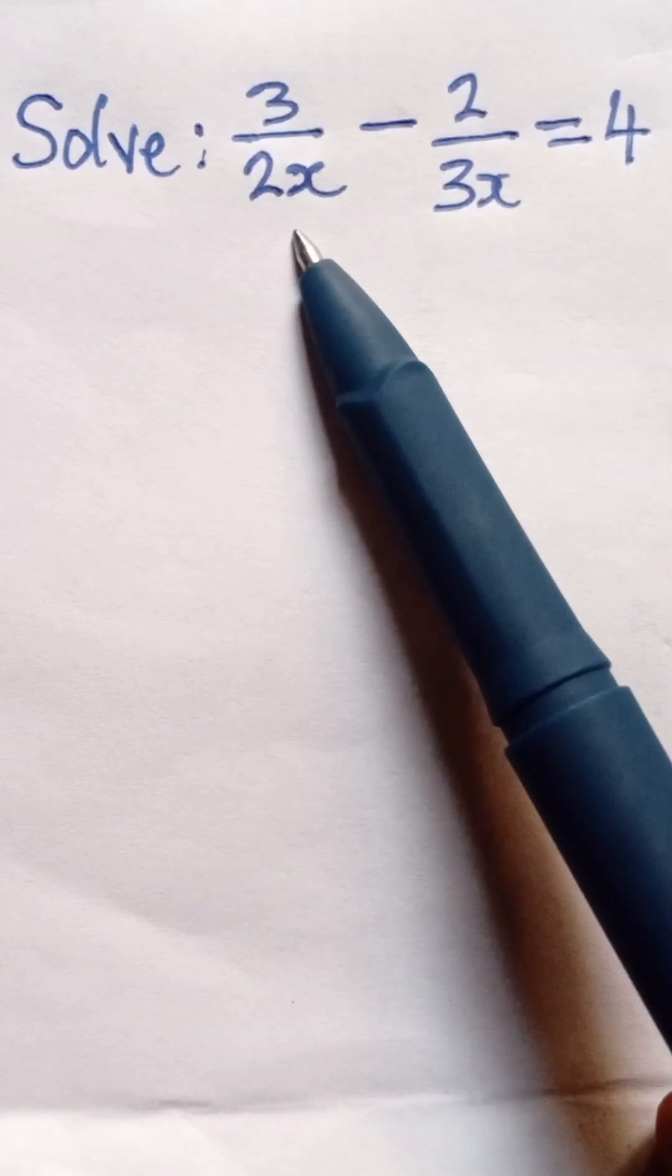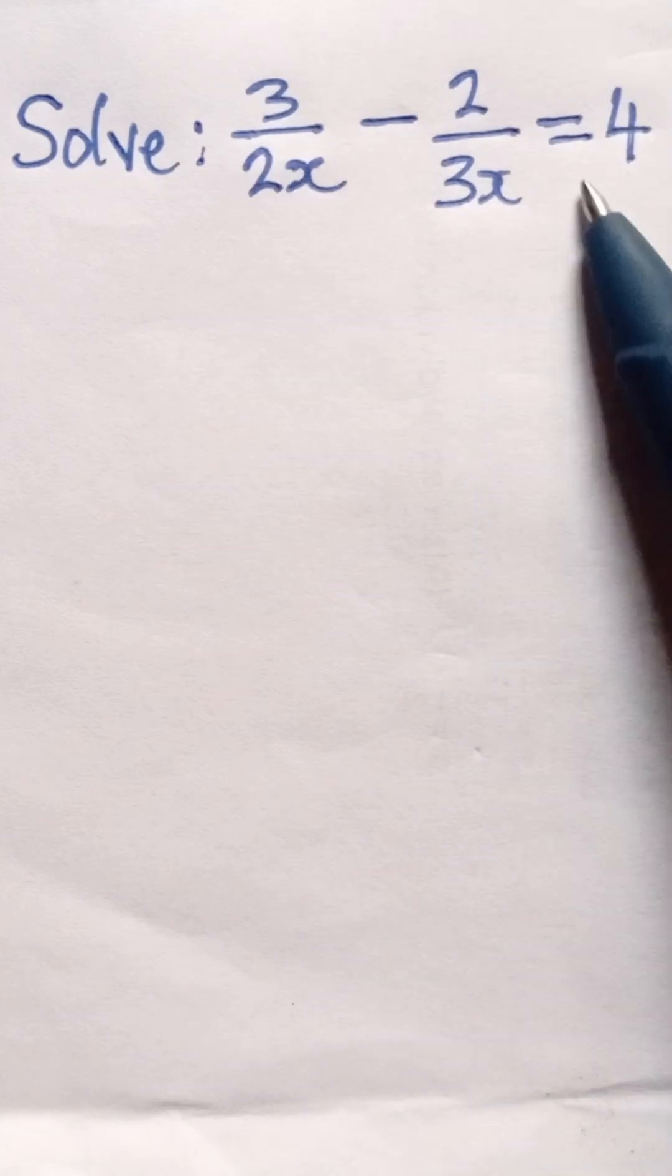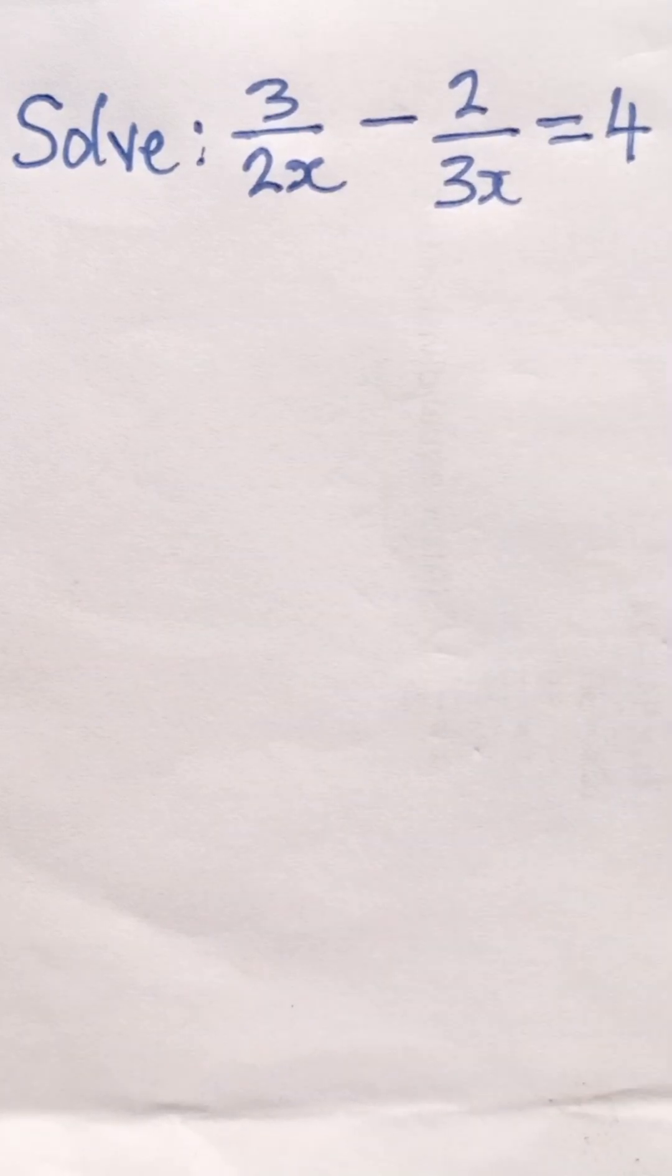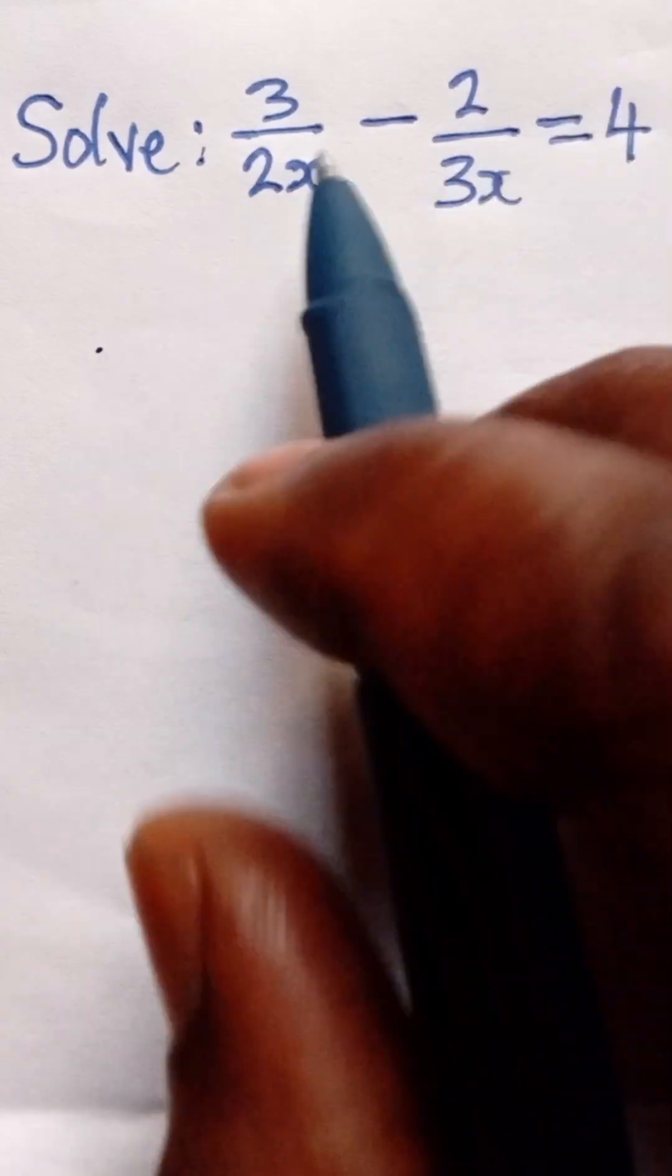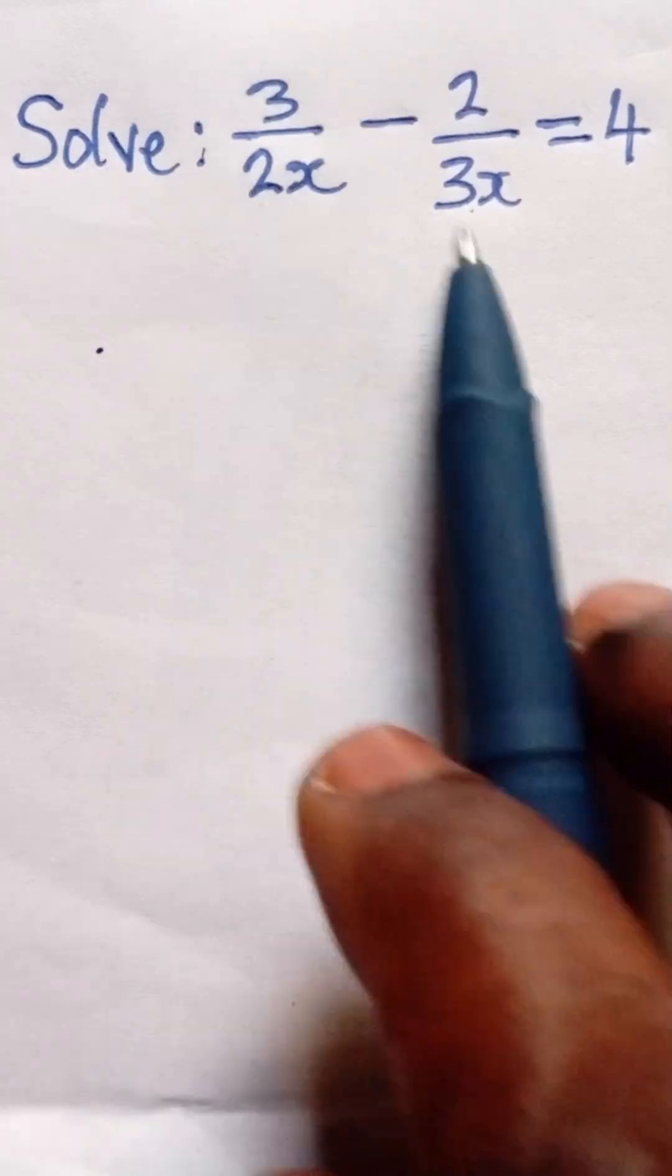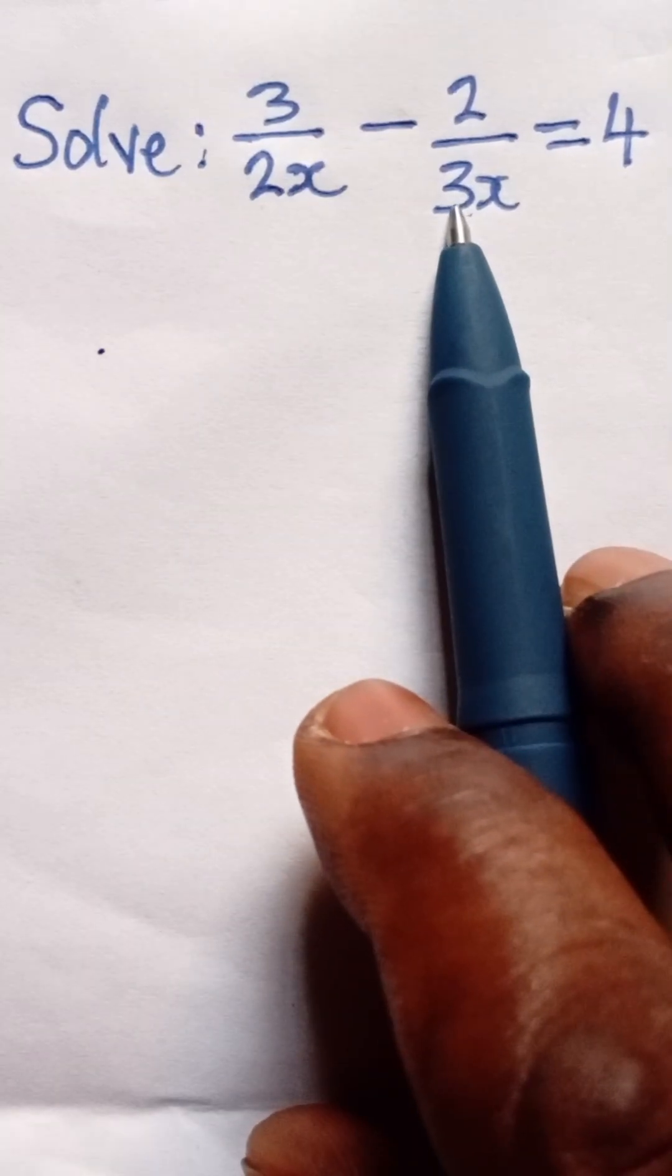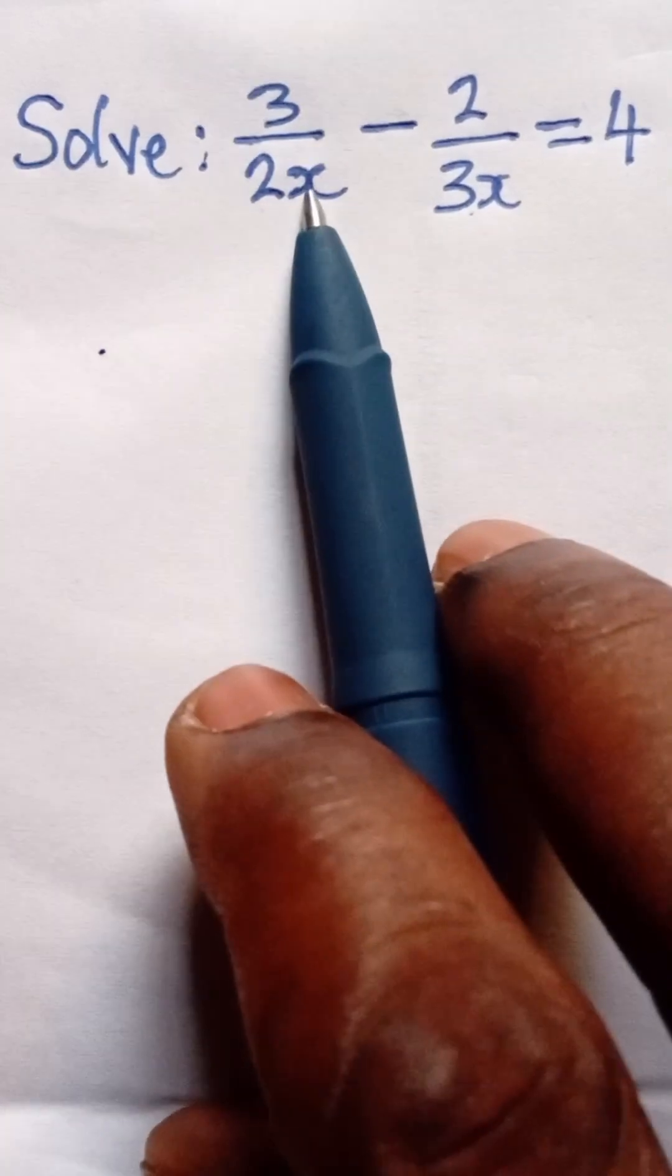Solve 3 over 2x minus 2 over 3x equals 4. The first thing to do is look for the LCM of these two values. The LCM of 2 and 3 is 6, that is the common denominator of 2 and 3, and then we have x.